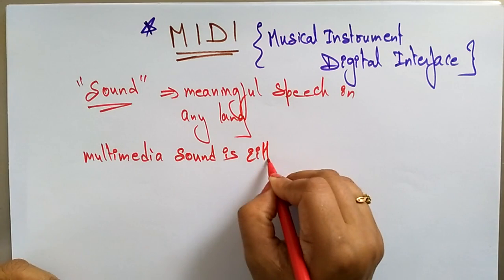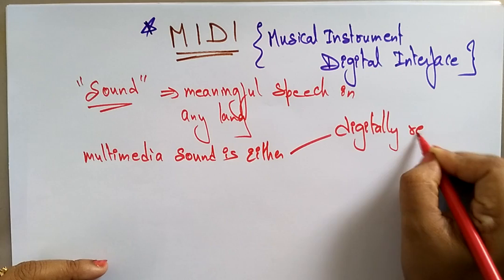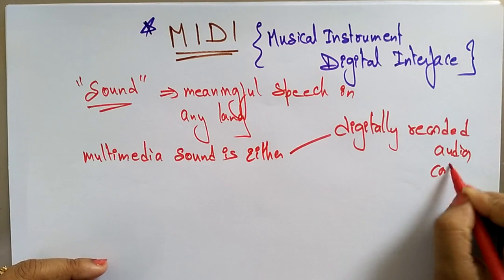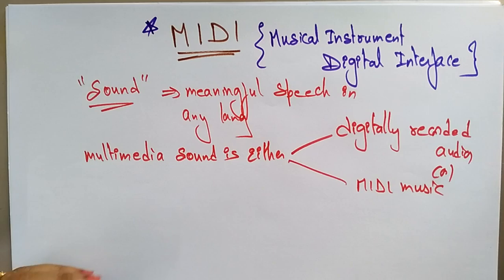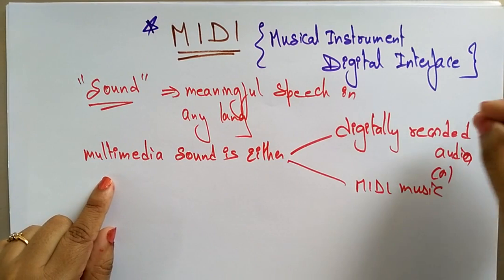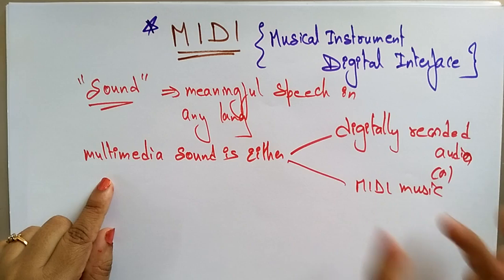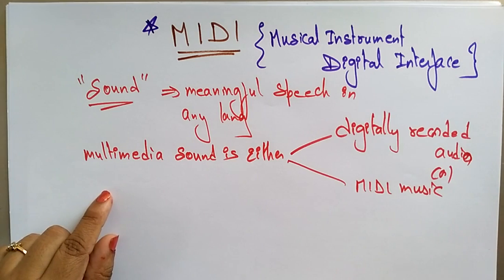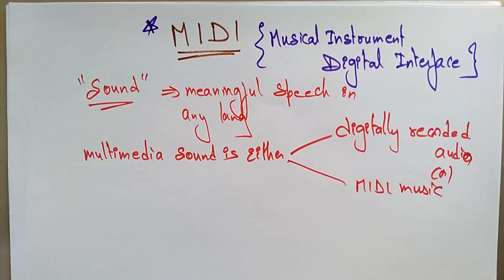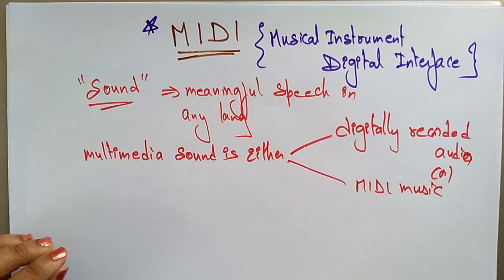The multimedia sound is either digitally recorded audio or MIDI music. So in multimedia technology, if you want to record, introduce, or add a sound, you can either digitally record audio or use the MIDI interface card.